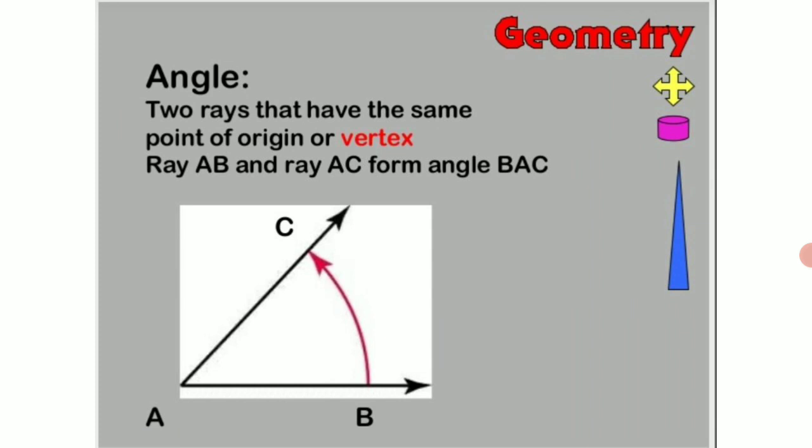Okay, so the angle formed is you can either call it CAB or you can call it BAC. It is all the same. And the two arms or rays are AC and AB.